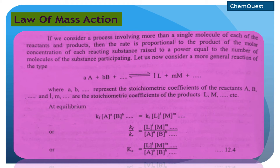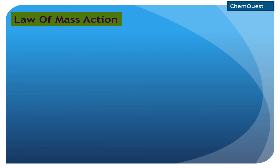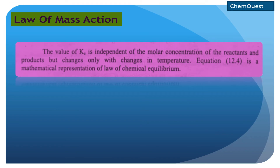The value of Kc is independent of the molar concentration of reactants and products, but changes only with change in temperature. So your equilibrium constant Kc depends only upon temperature, and its value will change only when the temperature is changed. The Kc equation is a mathematical representation of the Law of Chemical Equilibrium.